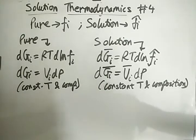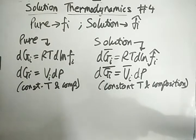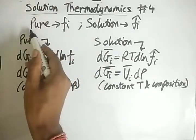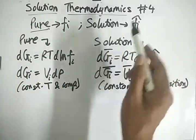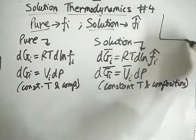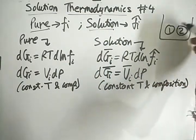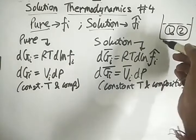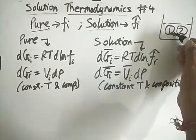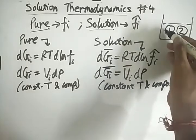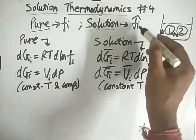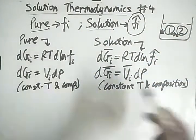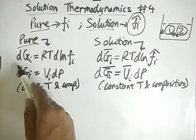Welcome back to the YouTube channel 'The Concept Guy.' This is Solution Thermodynamics Part 4. As we have seen earlier, for pure substances the fugacity is fi, and for a solution it is fi-cap. For a solution, when two or more compounds interact, the fugacity changes — if they attract each other, the effective force the compound exerts on the walls reduces, so fugacity becomes fi-cap.